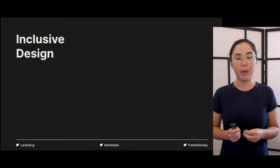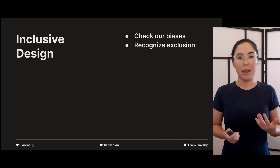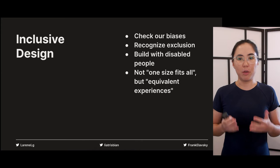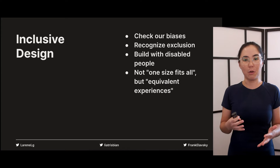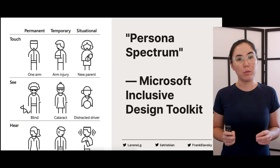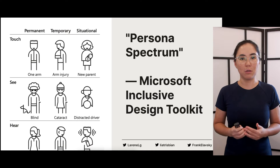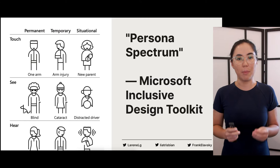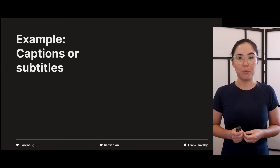Adopting inclusive design in your organization is one of the best chances at making your products accessible. Inclusive design forces us to check our biases, recognize exclusion, and make sure that we build with disabled people. It doesn't mean we build a one-size-fits-all solution, but forces us to think about how we might build our product in a way that offers different pathways for different people to achieve the same outcome. Inclusive design makes us shift our mindset to think about moments of disability. Microsoft's inclusive design toolkit includes the persona spectrum — a tool that lets us think about disability as permanent, temporary, or situational.